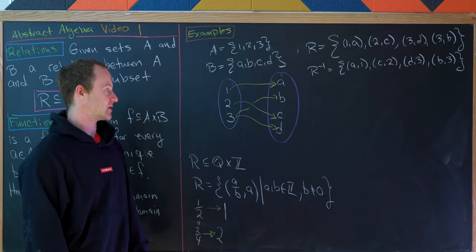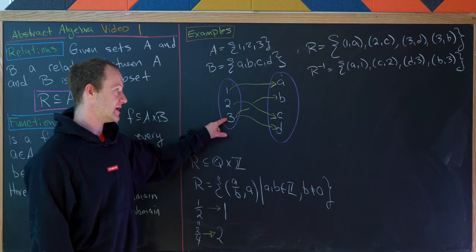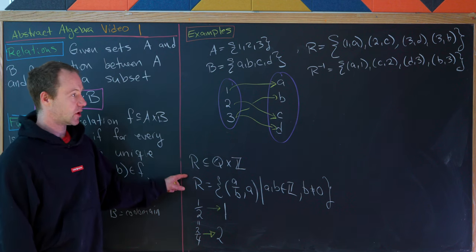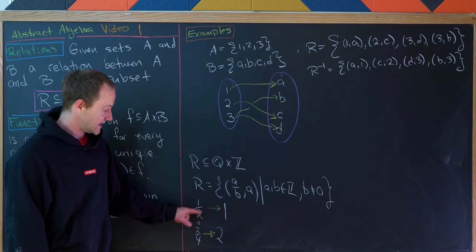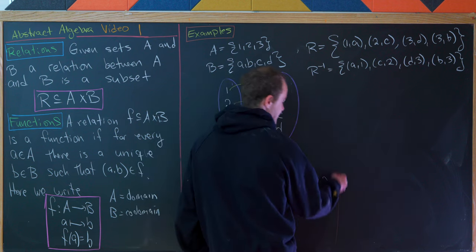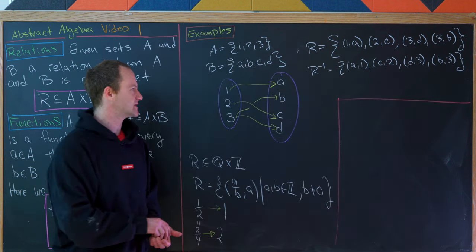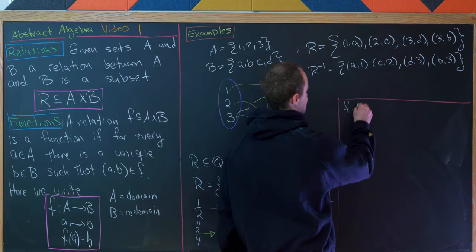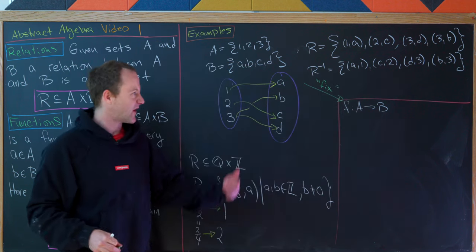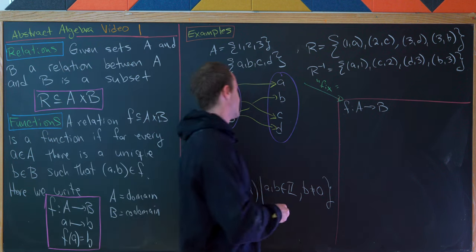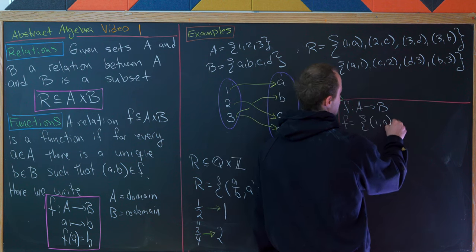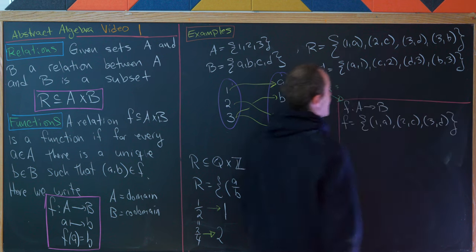Neither of our earlier examples are functions. The first is not a function because 3 is mapped to both b and d — not a unique element of the codomain. The second is not a function because one-half is mapped to both 1 and 2. We could fix the first one: let f go from A to B as the set of ordered pairs {(1,a), (2,c), (3,d)}, erasing the arrow from 3 to b. Now every element maps to exactly one element, and the fact that b is not mapped onto by anything is totally fine.